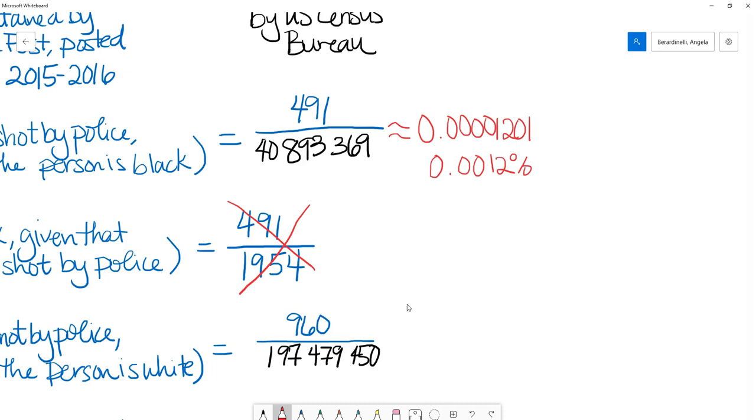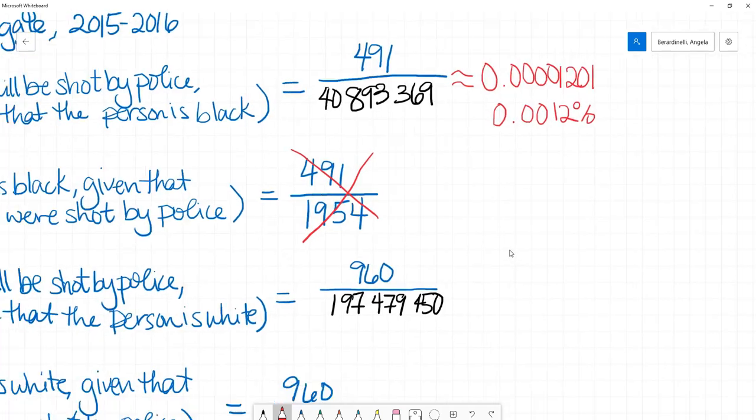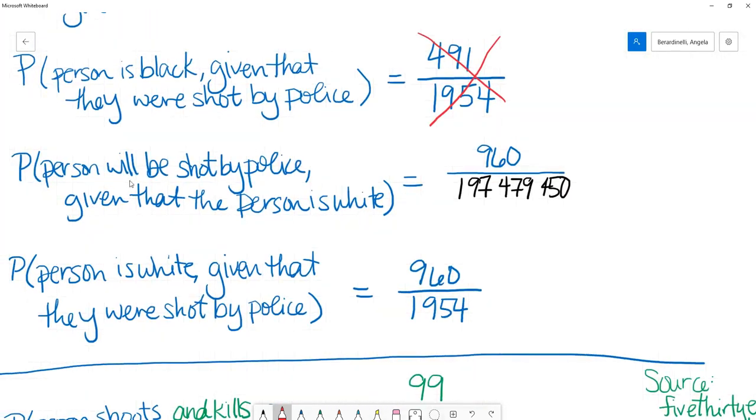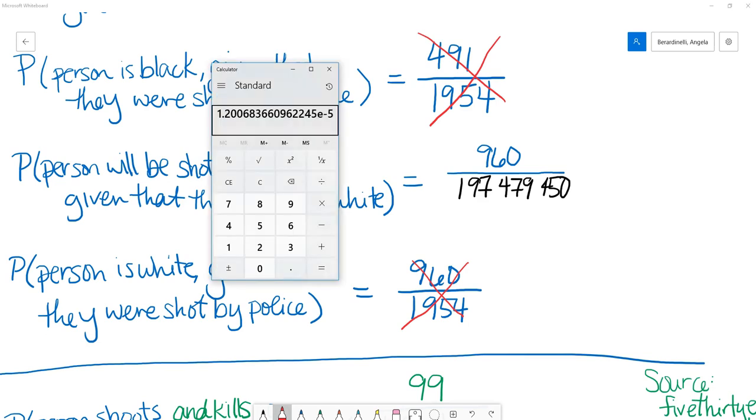What we were trying to compare that to is we wanted to see if this number is more or less than the probability of a white person being shot by police. So how we computed that in the previous video, we were really computing the probability of a person being white, given that they were shot by police. We meant the probability of a person getting shot by police, given that they're white. So this is the probability that we want to compute.